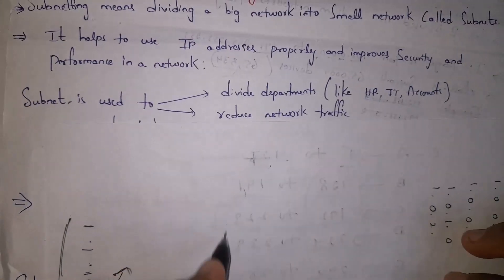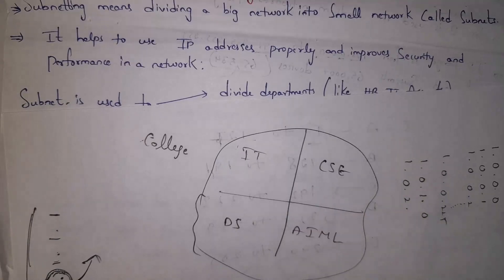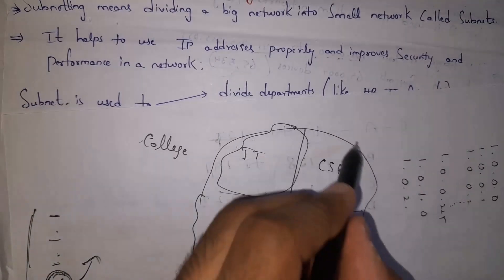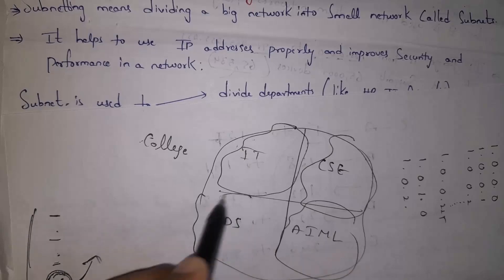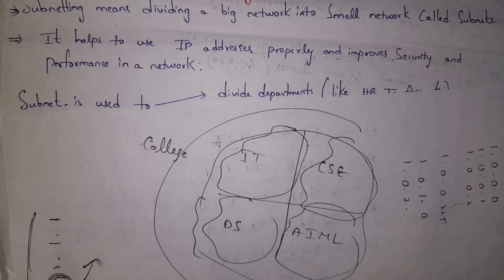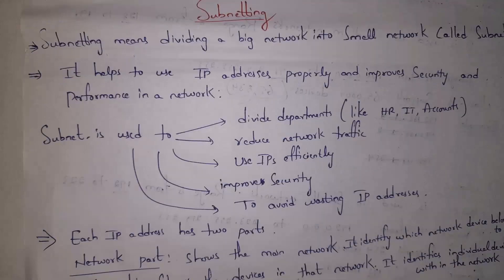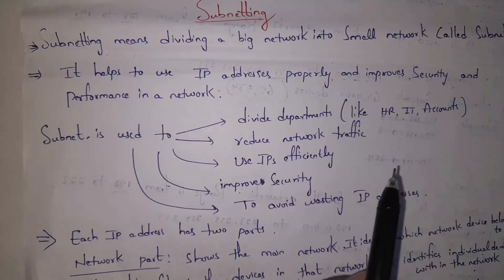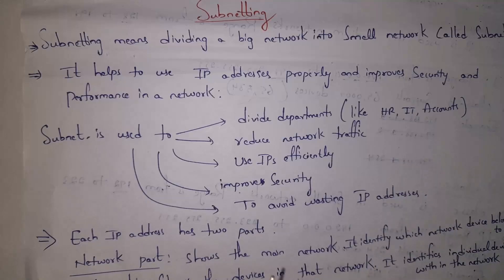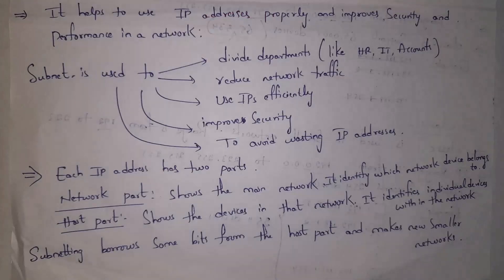For example, let's say there is a college. Instead of making the complete college a single network, the entire college network is divided into four subnetworks: the IT department is one subnetwork, CS is one subnetwork, AMR is one network, and DS is one subnetwork. By dividing a big network into smaller networks, security and performance increase. Subnetting is used to divide departments like HR, IT, and accounts, which reduces network traffic and allows us to manage IP addresses efficiently.